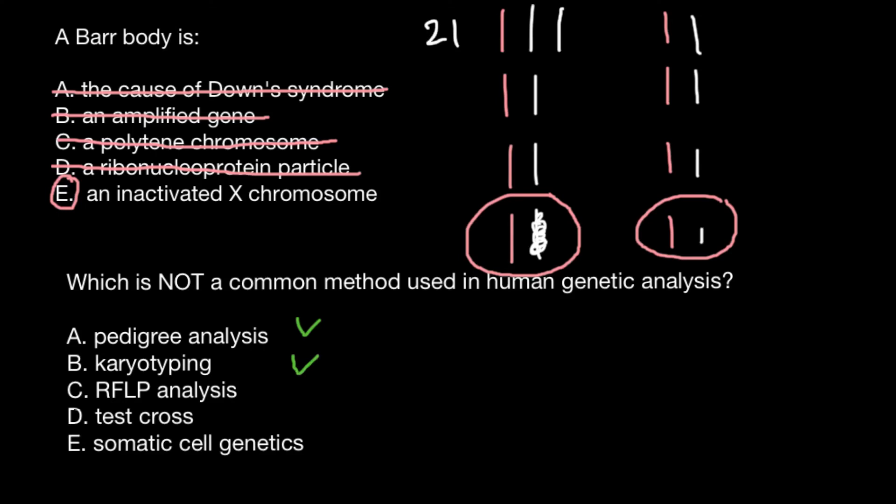Answer C, restriction fragment length polymorphism analysis, is also widely used because with this analysis we can see point mutations in the genome, and also this is widely used in fingerprinting of the genome.